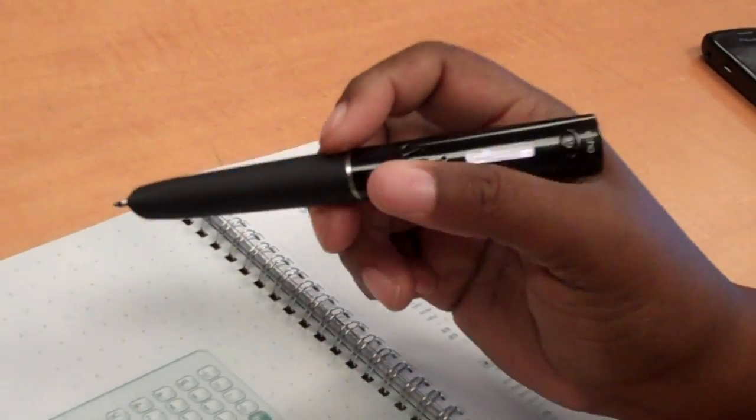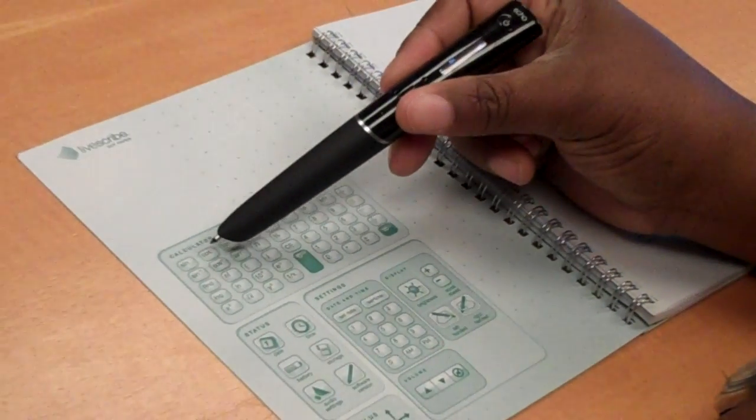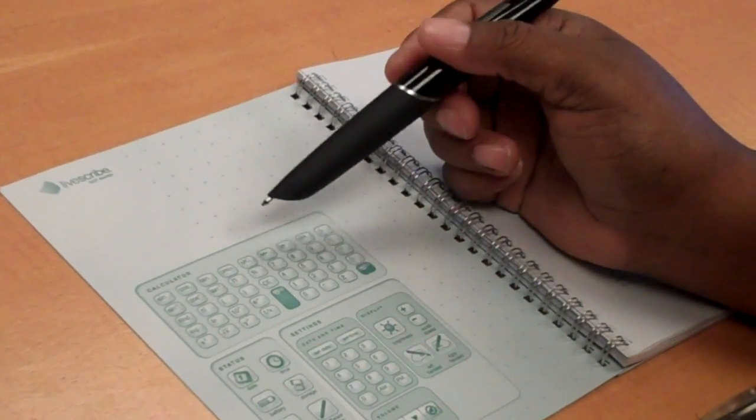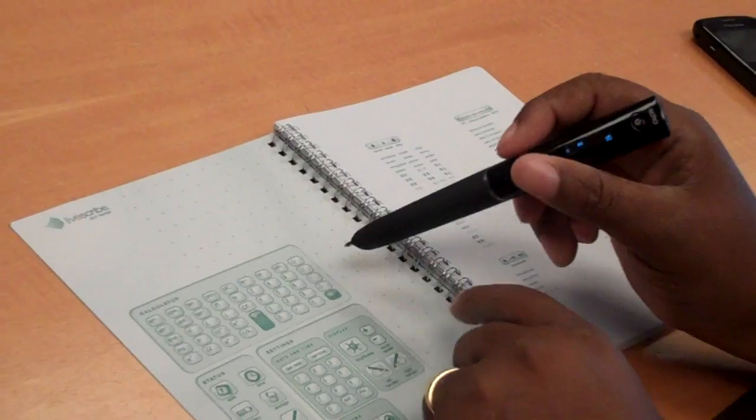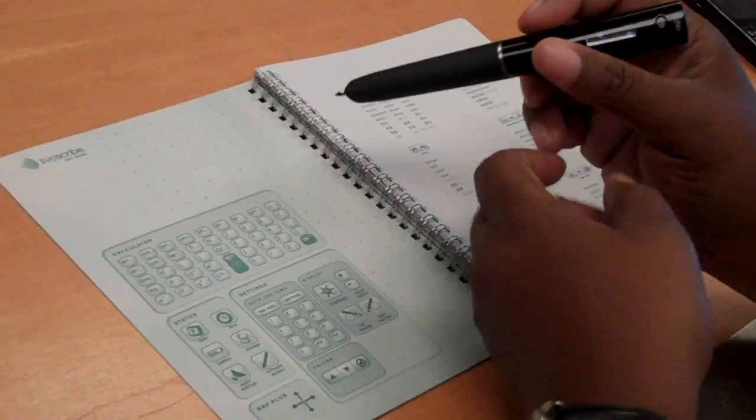So it can do - I probably can't see all these things because it's a little small - but it can do cosine, your basic stuff as well. Again, you have to have the special paper, and this is the special paper.